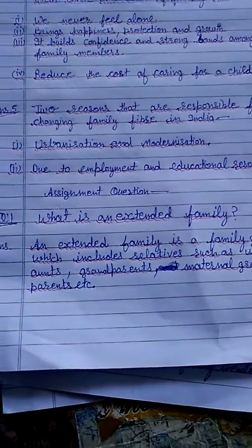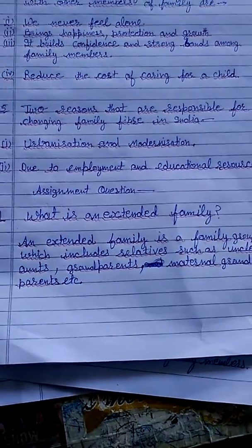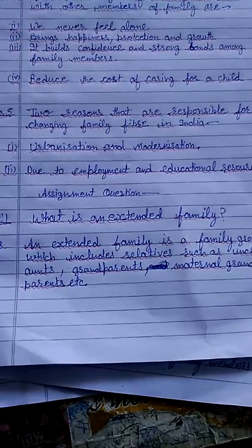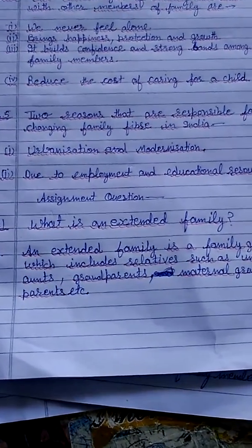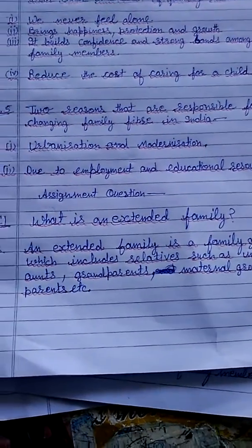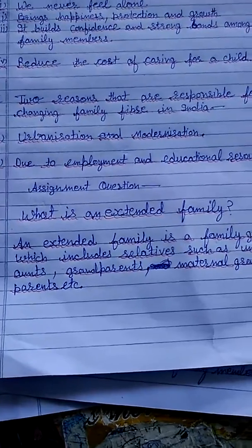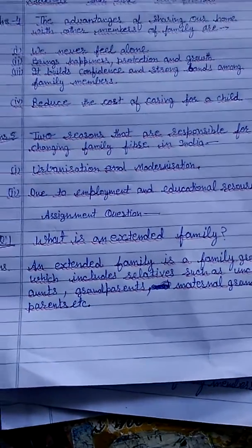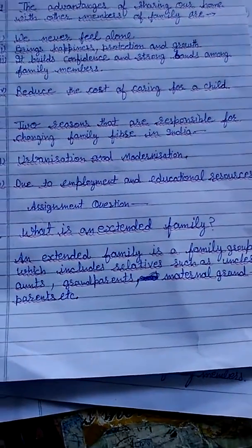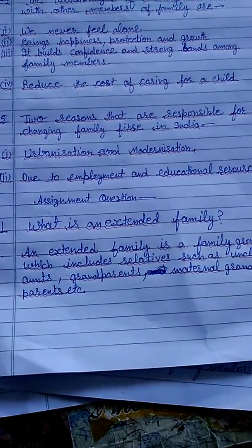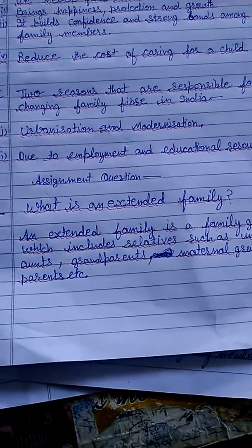Good afternoon students. Today we will start the sixth part of this lesson. Previously, you learned about two types of family: joint family and nuclear family. Today we will read about the third type of family.